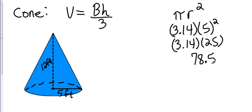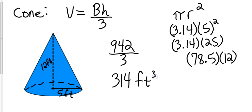Now I'm going to take that times my height, so 78.5 times 12. That gives me 942, and then I'm going to divide that by 3, which gives me a total volume of 314 cubic feet. Okay, area of the circle on the base, πr², times 12, which is the height, and then I'm going to divide that by 3, which gives me 314 cubic feet.